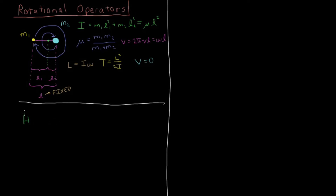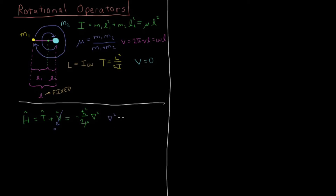For our Hamiltonian we have two parts: kinetic plus potential energy operator. In general that is minus ħ² over 2 times the mass — using the reduced mass μ for this system — times the del-squared operator, which is the sum of second partial derivatives with respect to each Cartesian dimension. That is the kinetic energy operator. The potential energy operator is zero, so all we have is the kinetic energy in a rotational coordinate system.